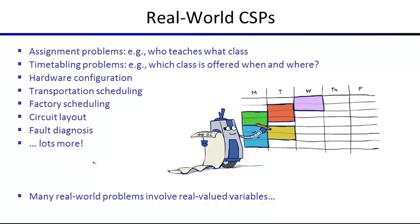There are many real-world CSP examples: assignment problems like which professor teaches which class or how students build their schedules; hardware configuration; chip routing; transportation scheduling like loading a UPS truck for efficient delivery; factory scheduling; and circuit layout and fault diagnosis. Many real-world problems are much larger than the illustrations on slides and often require handling real-valued variables extending beyond what we cover here.